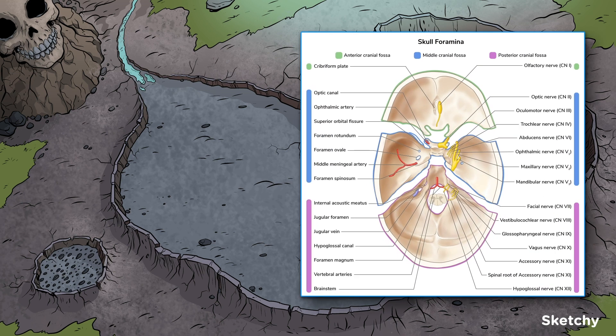The skull base has three major depressions: the anterior cranial fossa, middle cranial fossa, and posterior cranial fossa. We'll use these craters to represent each of the fossa.